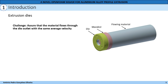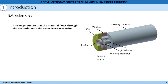The extrusion dies are the most important component in the extrusion process because they have the function to assure that the material flows through the die outlet with the same average velocity. In this image we can see the flowing material, the mandrel which makes the inner contour of the profile, and the die which makes the outer contour. Inside the extrusion dies, through the cross-section cut view, we can see the portals and the welding chamber, where the independent flow fronts merge and form the weld lines. The material passes through the bearing length in red, and then the profile is extruded.